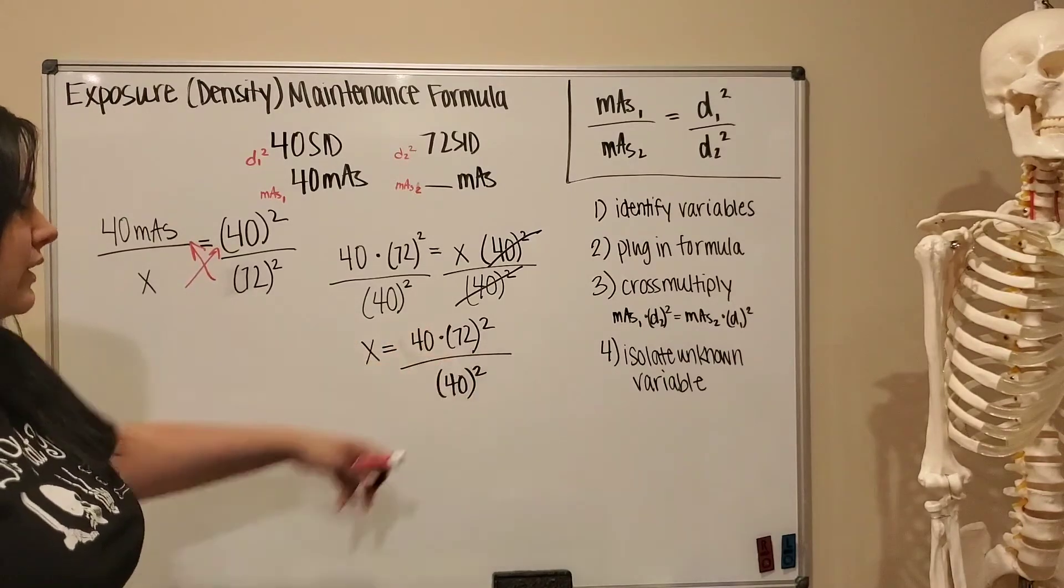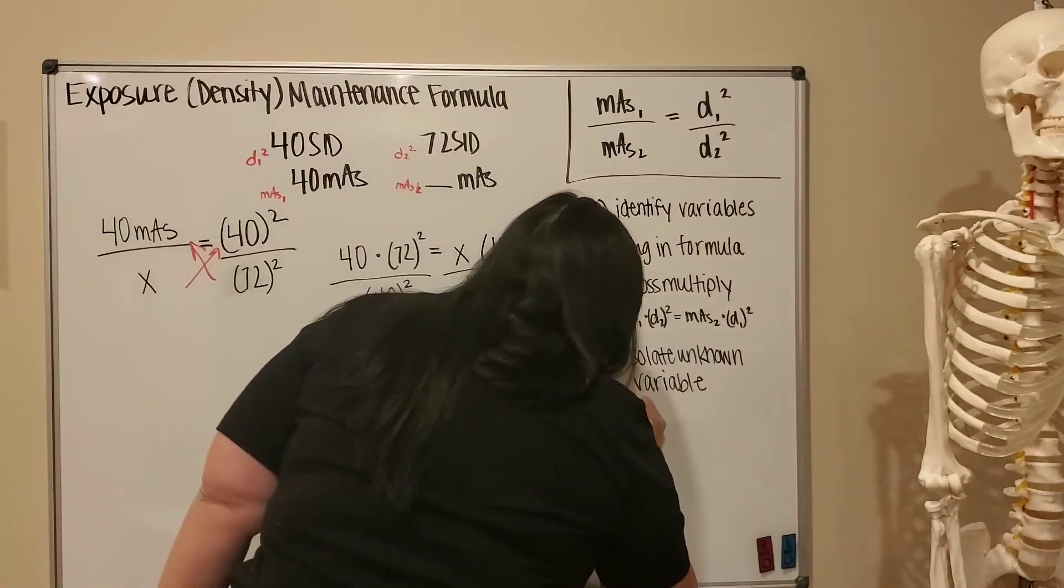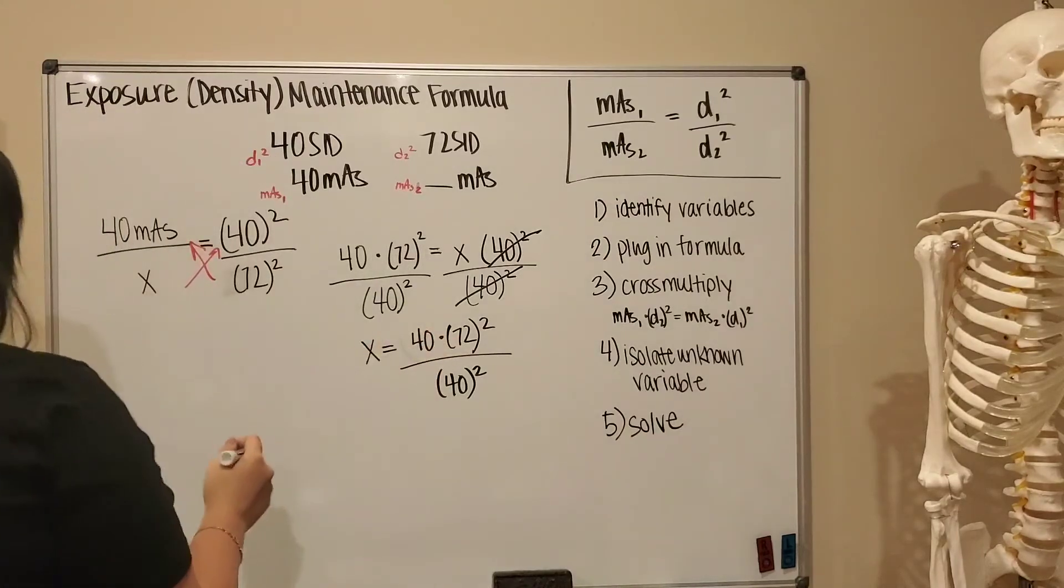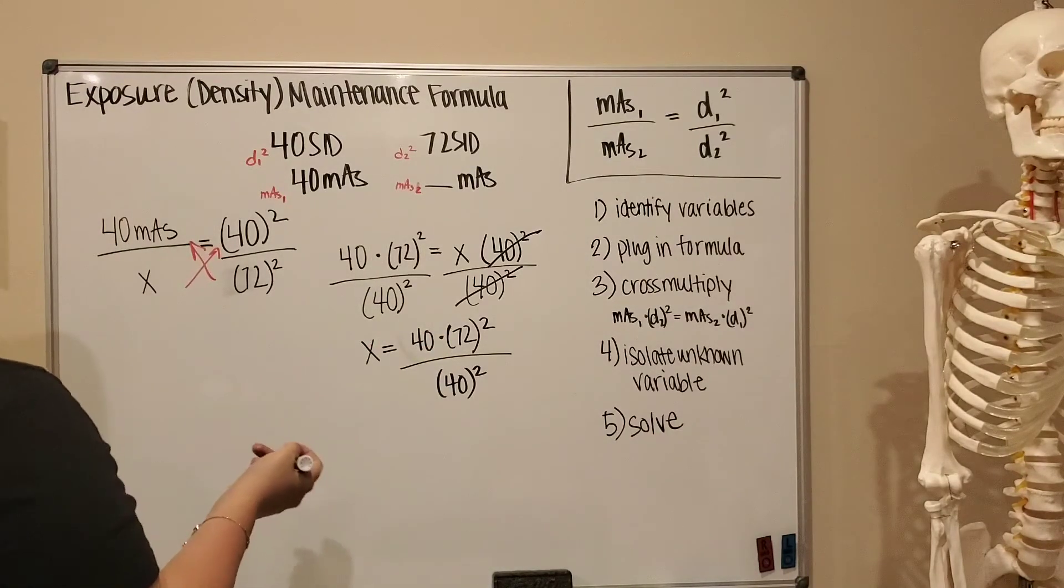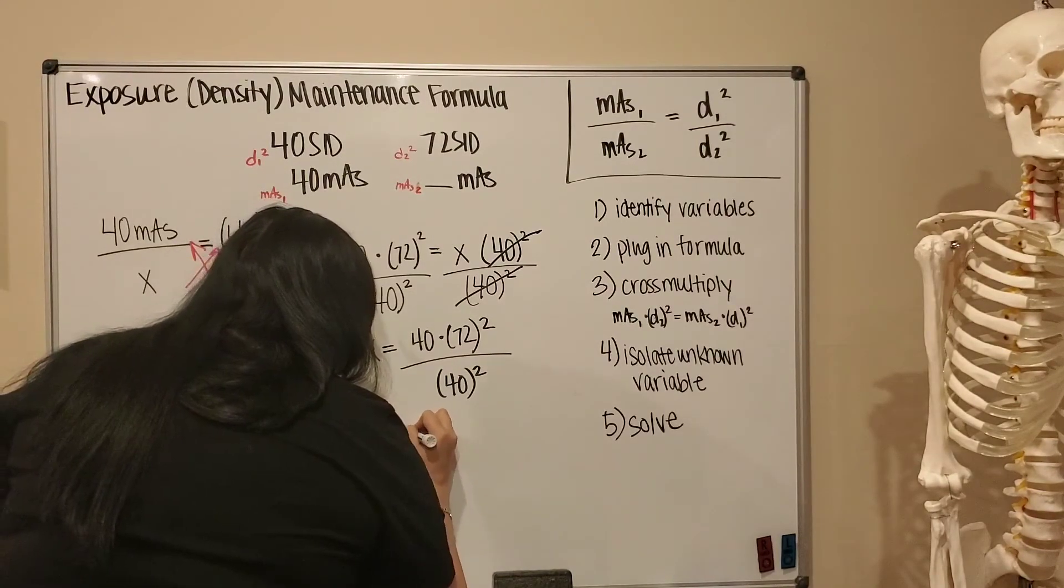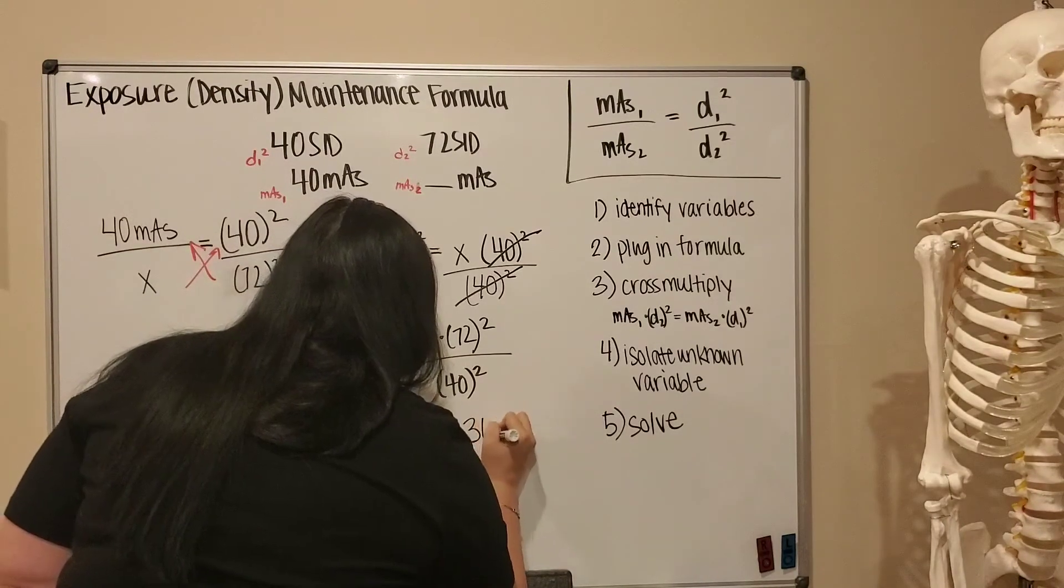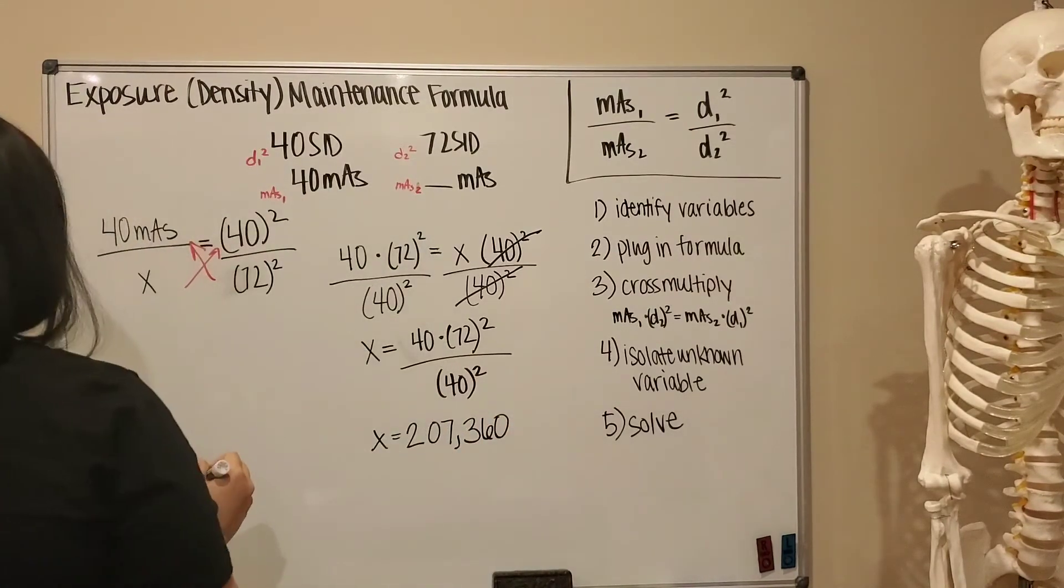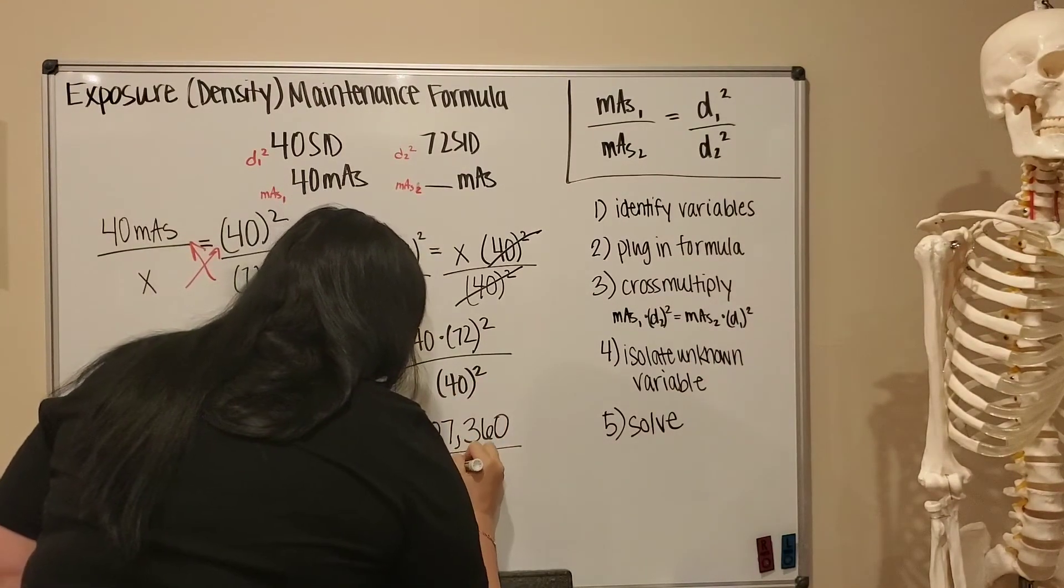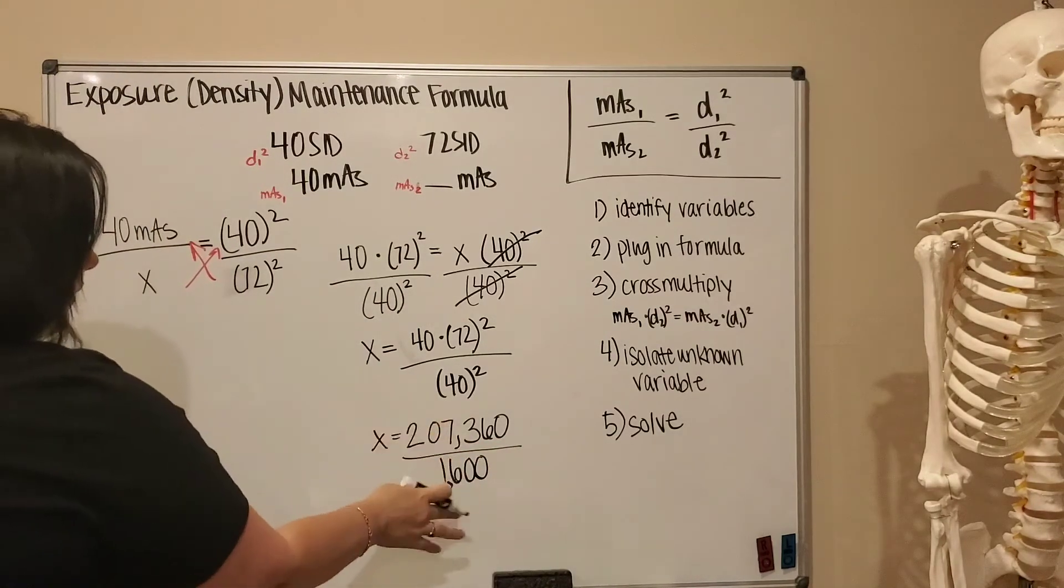Okay, I'm going to plug these values in directly to my calculator to get my next step, which is just solving. So 40 times 72 squared—leave your little brackets on, a lot of scientific calculators require it—but that is going to be 207,360 for the top line and your bottom line, 40 squared, is 1600. Okay, so divide those two out.